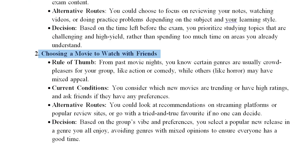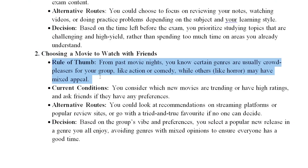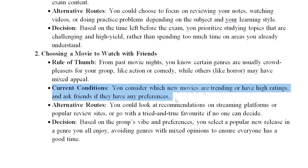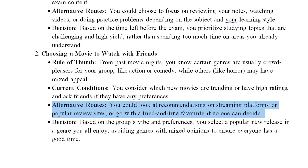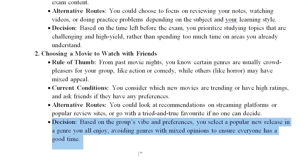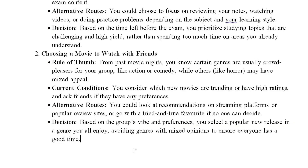Second example: choosing a movie to watch with your friends. The rule of thumb from past experience — you have to decide a movie for your group: comedy, action, or thriller. Current conditions: select a high-rating movie. Alternative routes: use review platforms to recommend a movie in your group, then take a final decision. Heuristic method is implemented, but it is not 100% accurate.